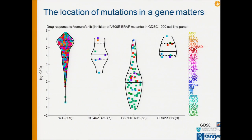Here we are looking at the drug response of about 900 cancer cell lines to the drug vemurafenib, which is an inhibitor of V600E-BRAF mutants — the mutants that have an amino acid substitution of valine to glutamate at the 600 amino acid position in the BRAF protein. These 900 cell lines are divided into four groups based on the BRAF mutation status. On the left-hand side, we have about 800 cell lines which are BRAF wild type, and they have high IC50.